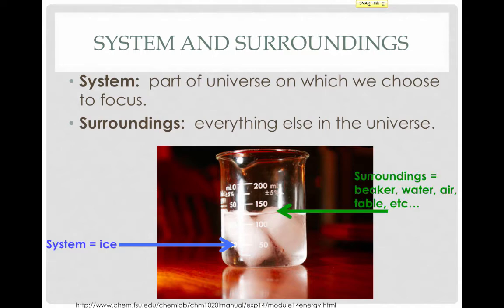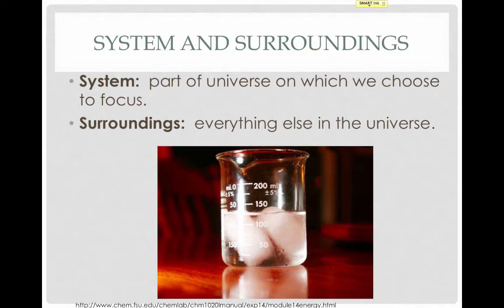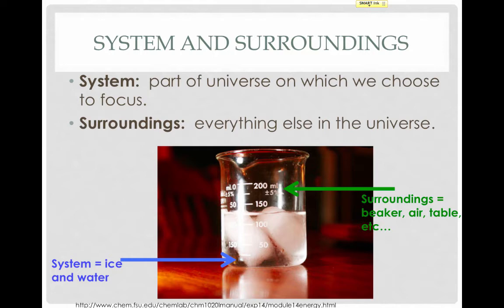So the water, the beaker, the air, the table the beaker's sitting on, you — everything else that isn't the ice is the surroundings. We could also choose to look at the energy flowing into or out of the water and the ice in the beaker. That would make our system the ice and the water. In that case, our surroundings would be the beaker, the air, the table, you — everything else that's not the ice and the water. So to a certain extent, the system is a matter of choice. The surroundings is just everything that isn't the system.